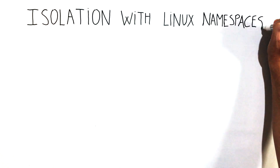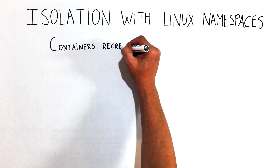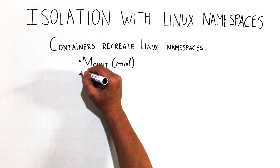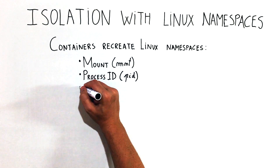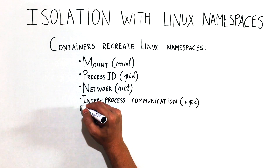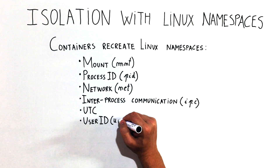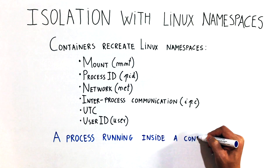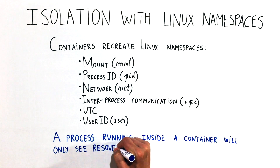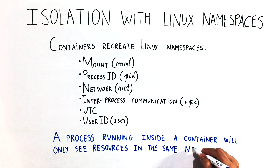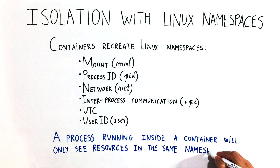By default, each Linux system initially has one single namespace. All system resources, such as file systems, process IDs, user IDs, network interfaces, and others belong to the single namespace of the operating system. Containers can recreate Linux namespaces, so a process running inside the container will only see resources that belong to the container's namespaces.